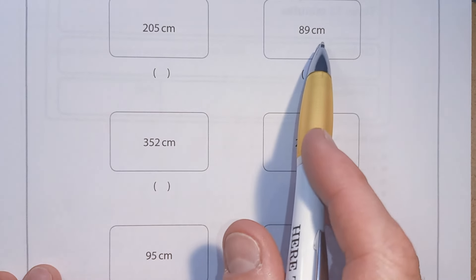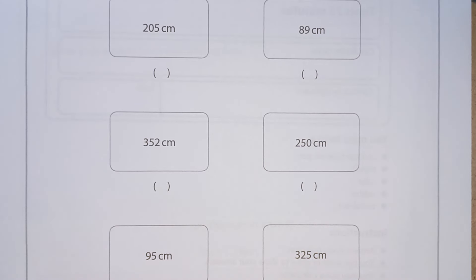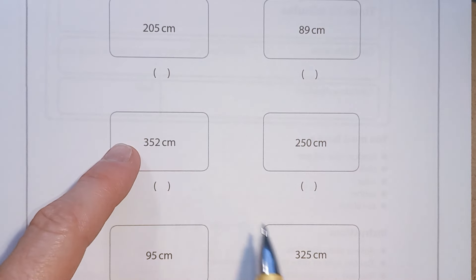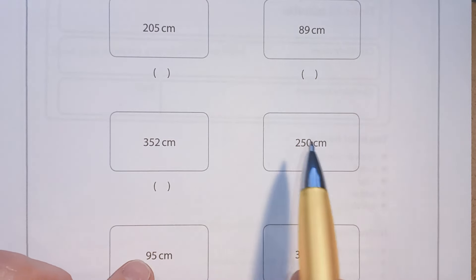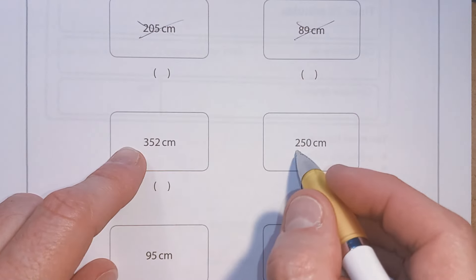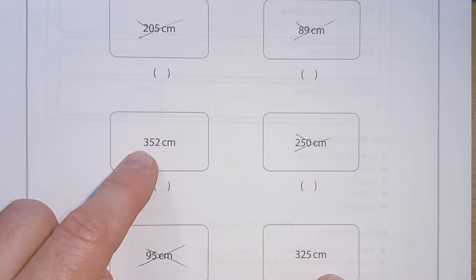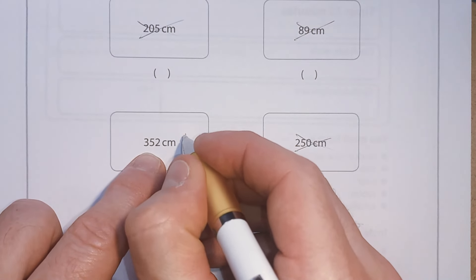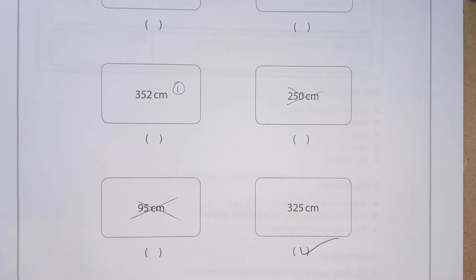We've got 205, 89, 352, 250, 95, and 325. We want the second tallest. Well, which is the tallest? We've got two plants in the 300s — these will be taller than the ones in the 200s and the ones without hundreds. We can rule all those out. Between 352 and 325, the biggest is 352, so the second biggest must be 325.